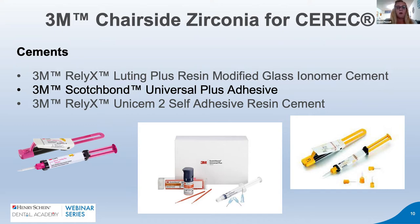With zirconia you have several cement options. First, 3M offers the Relyx Luting - a five-second tack cure that allows easy cement removal, has high bond strength, is virtually no post-op sensitivity, moisture-tolerant, and has sustained fluoride release. The next product is 3M Scotch Bond Universal Plus Adhesive along with the Relyx Universal Cement - Dr. Snyder's preferred system. It works for indirect restorations, direct composite bonding, and covers glass ceramics, zirconia, and even gold restorations. A nice catch-all material.